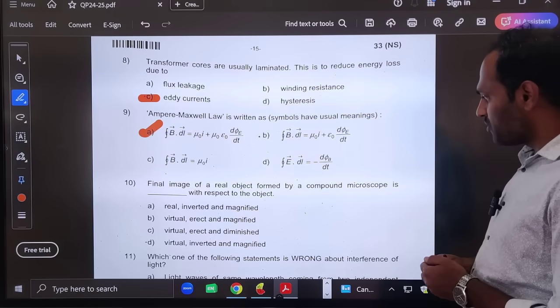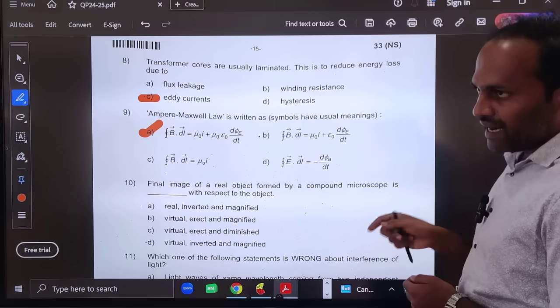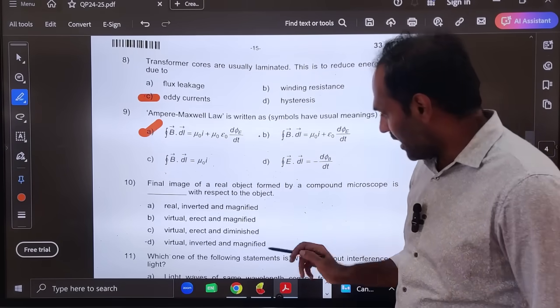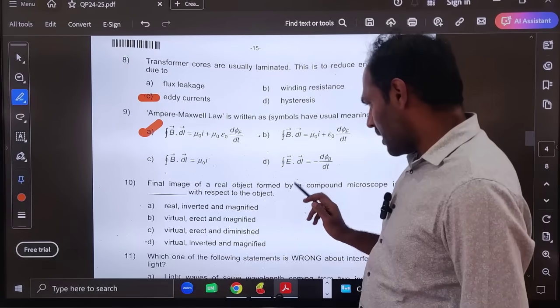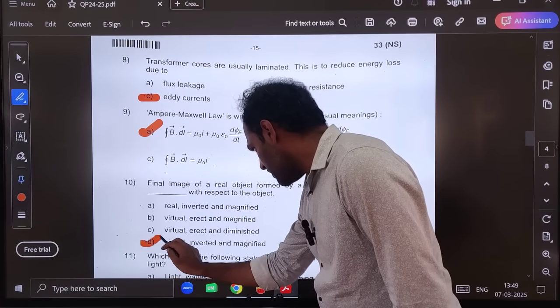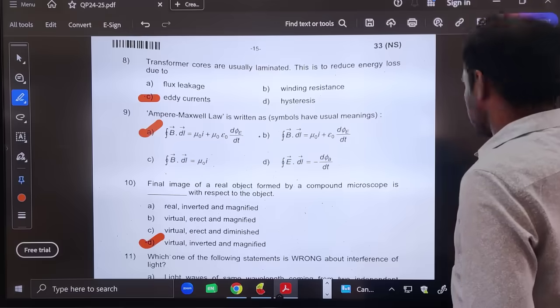Tenth question: Final image of real object formed by compound microscope, it will be inverted, virtual and enlarged. Enlarged image, that's why the compound microscope is used. Virtual, inverted and magnified. So option D will be correct, tenth question.